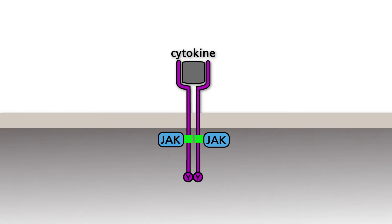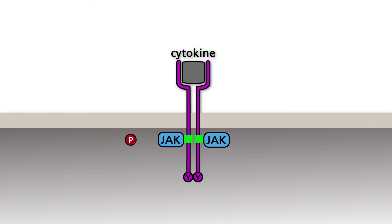The abbreviation JAK originates from the derogatory 'Just Another Kinase,' which, however, was soon changed to Janus kinase, as the extreme significance of this kinase family became increasingly evident. Bound to the receptor, JAKs phosphorylate tyrosine residues of the receptor.